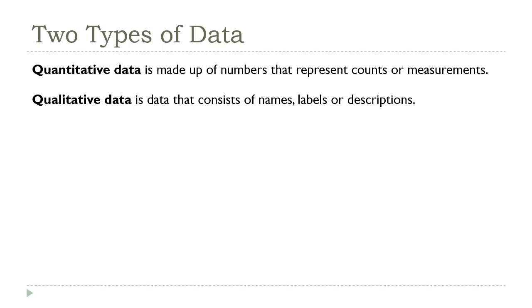Data and variables come in a variety of types, and understanding these types is an important step toward understanding what we can and can't do with the data. The highest level distinguishes between variables that represent counts or measurements and those that don't. One way to think about this distinction is to ask: does the average of the values tell me something about the population? If yes, the data is quantitative; if no, it's qualitative.